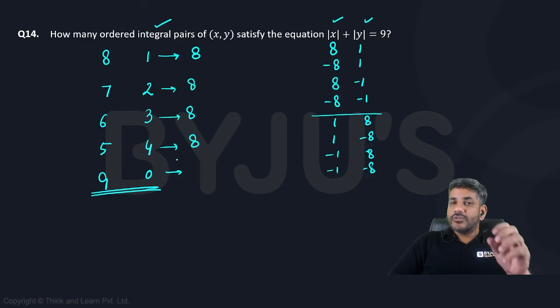But in case of 9 and 0, 0 cannot be put with a negative sign. Either it will be 9, 0, -9, 0, or it will be 0, 9, 0, -9. So 4 more cases.